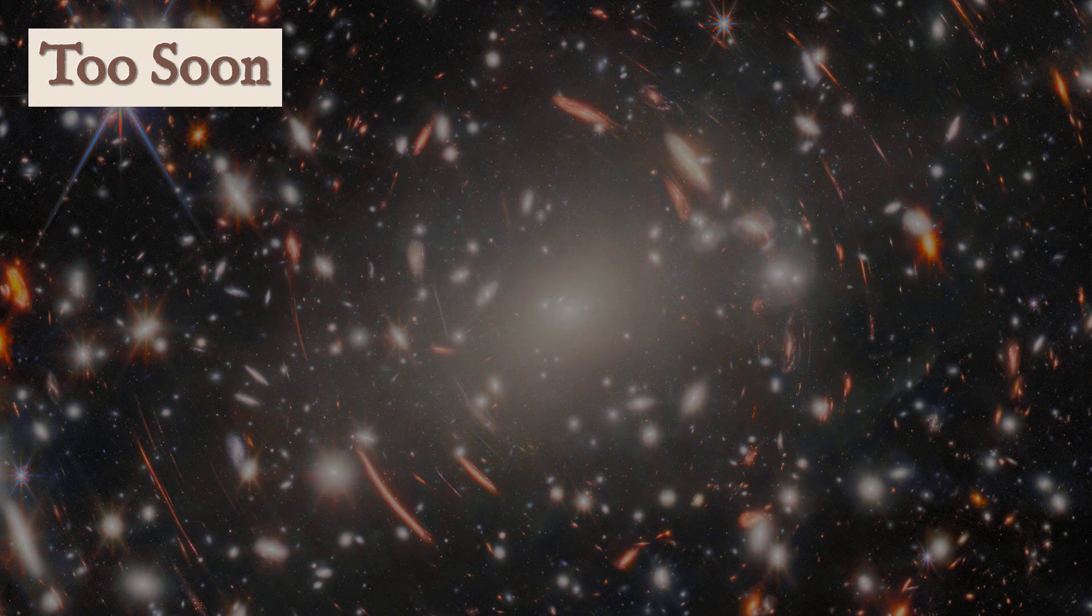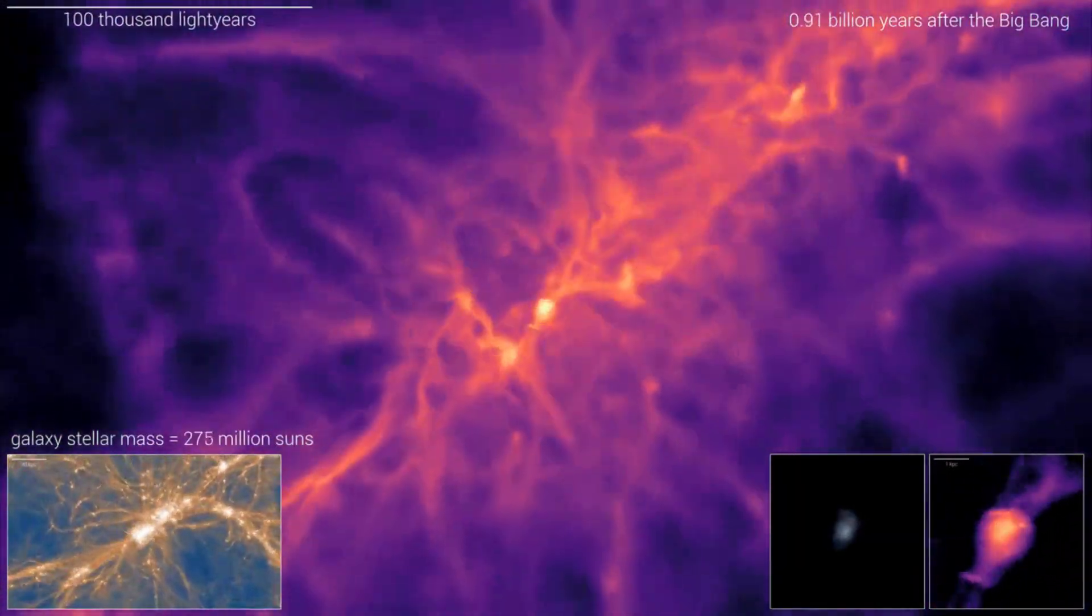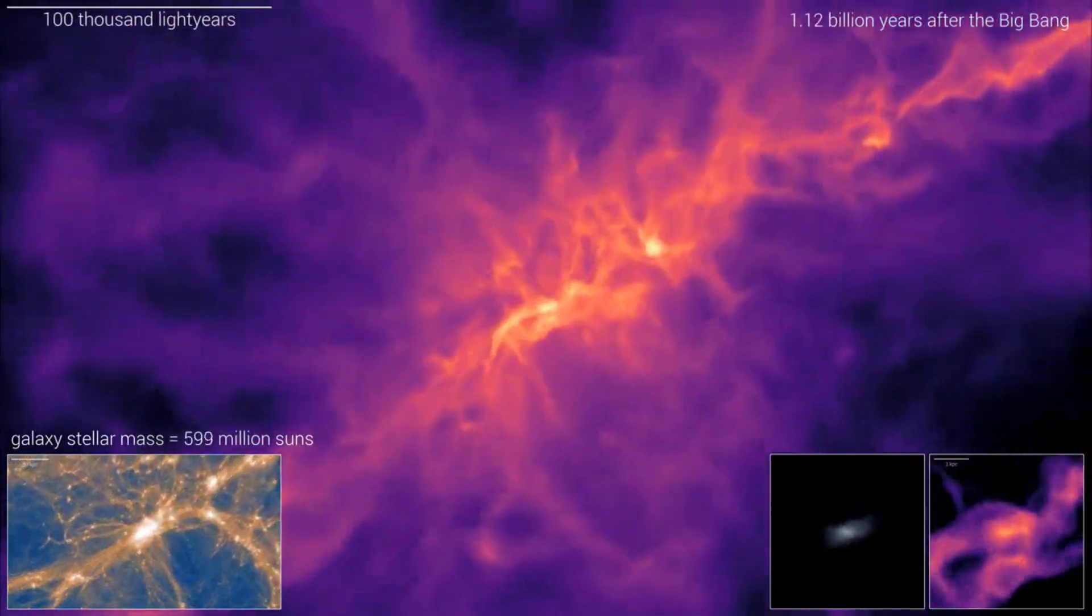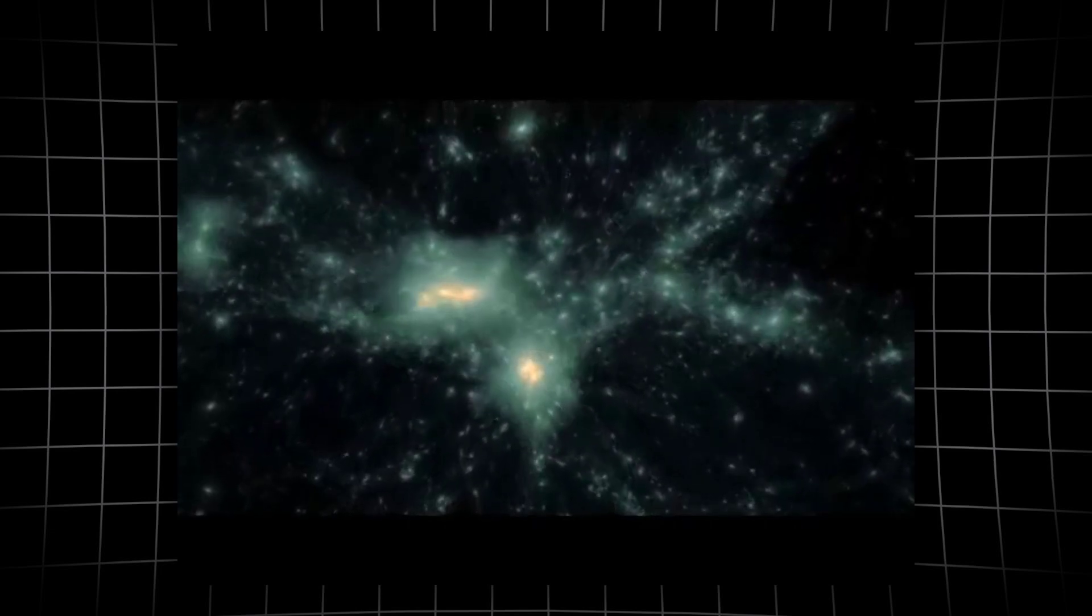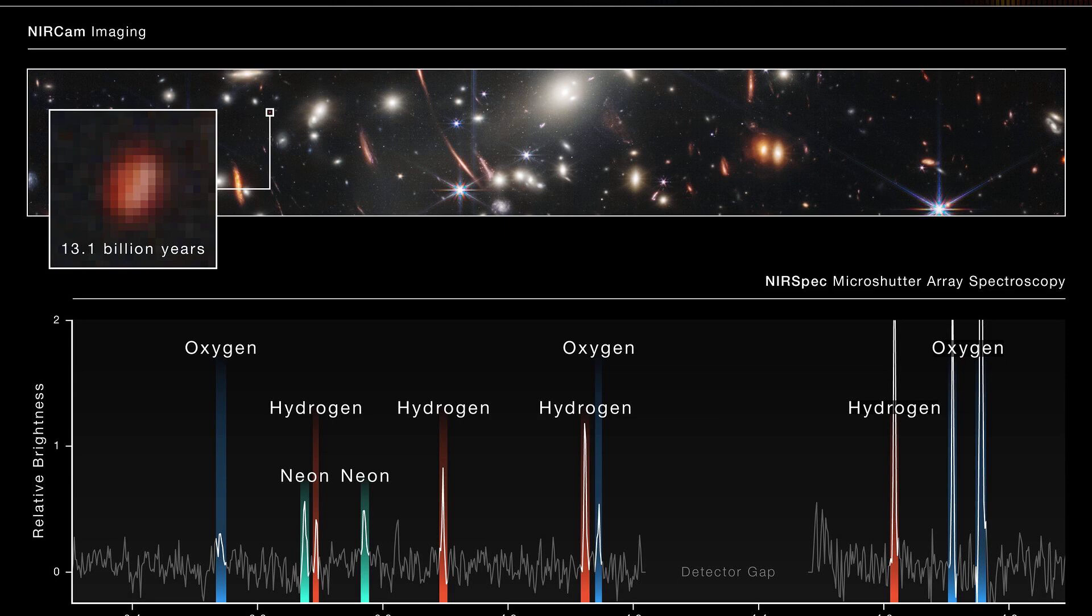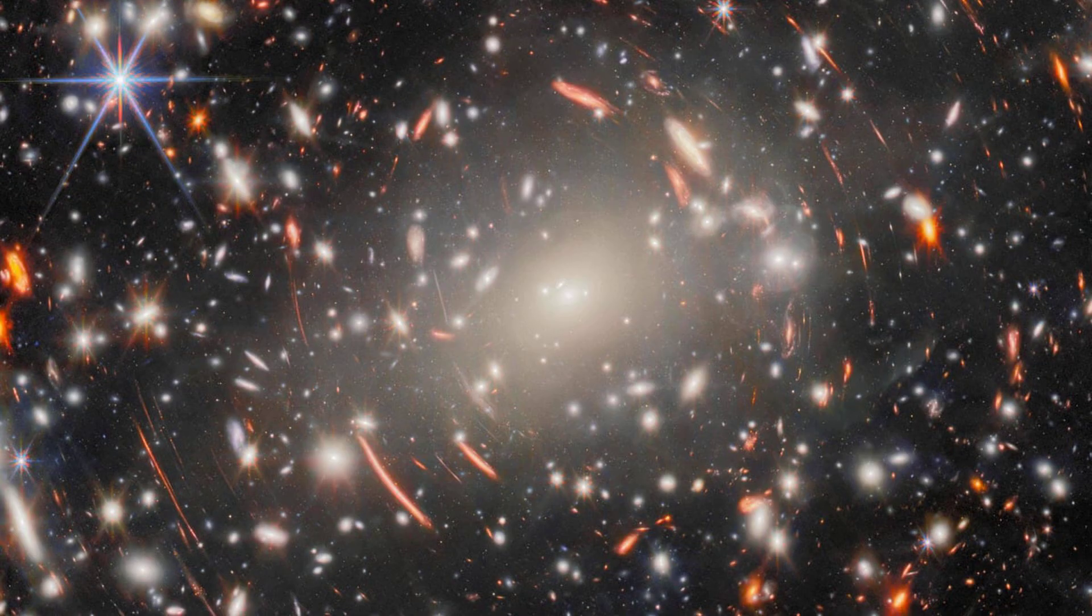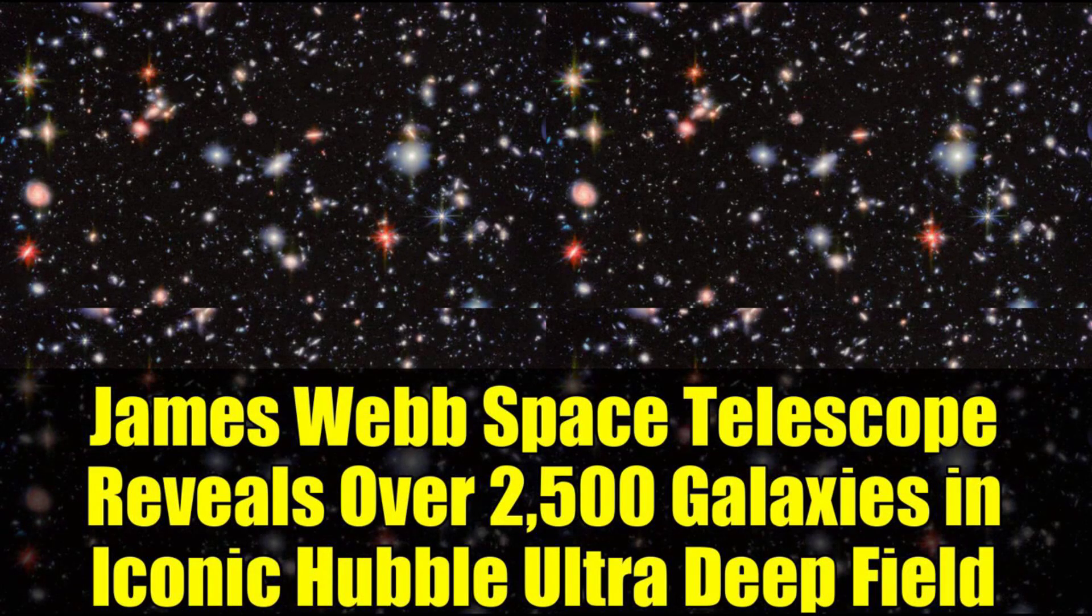On paper, these galaxies are impossible. They're too massive, too organized, too soon. The standard model said the early universe should be a place of small, chaotic blobs, slowly merging over eons. Instead, Webb's mirror caught a universe already busy building cosmic cities. The evidence was no longer a matter of theory. It was written in the spectra, in the mass, in the sheer number of ancient giants staring back from the edge of time.